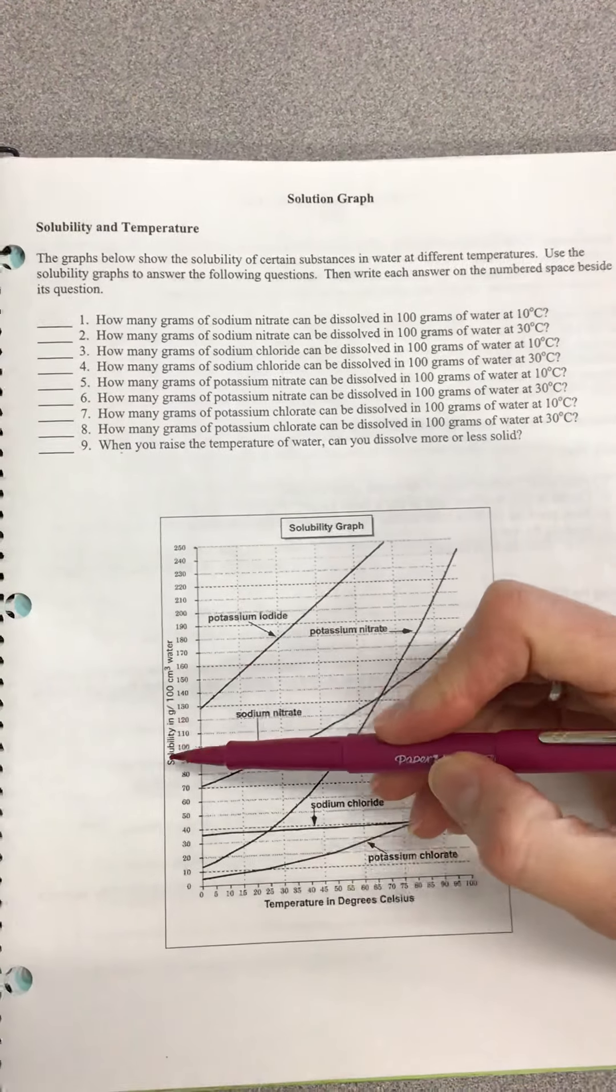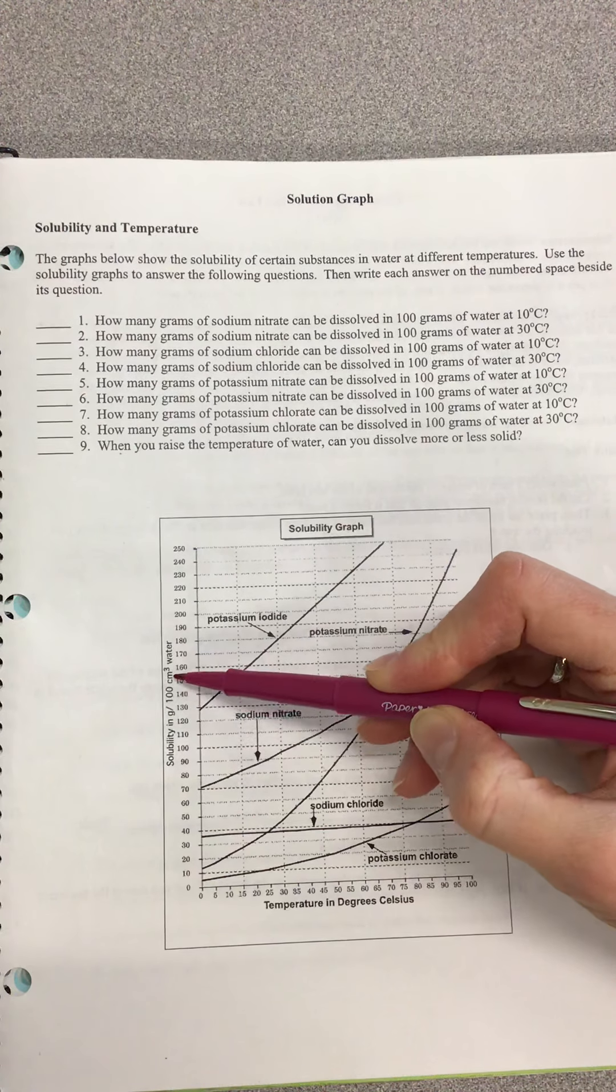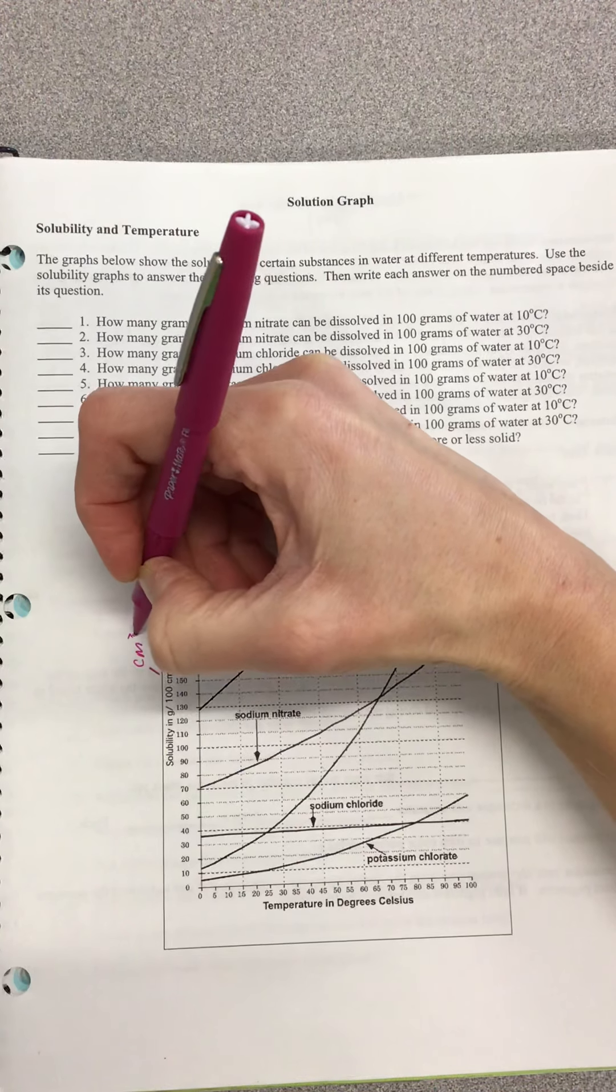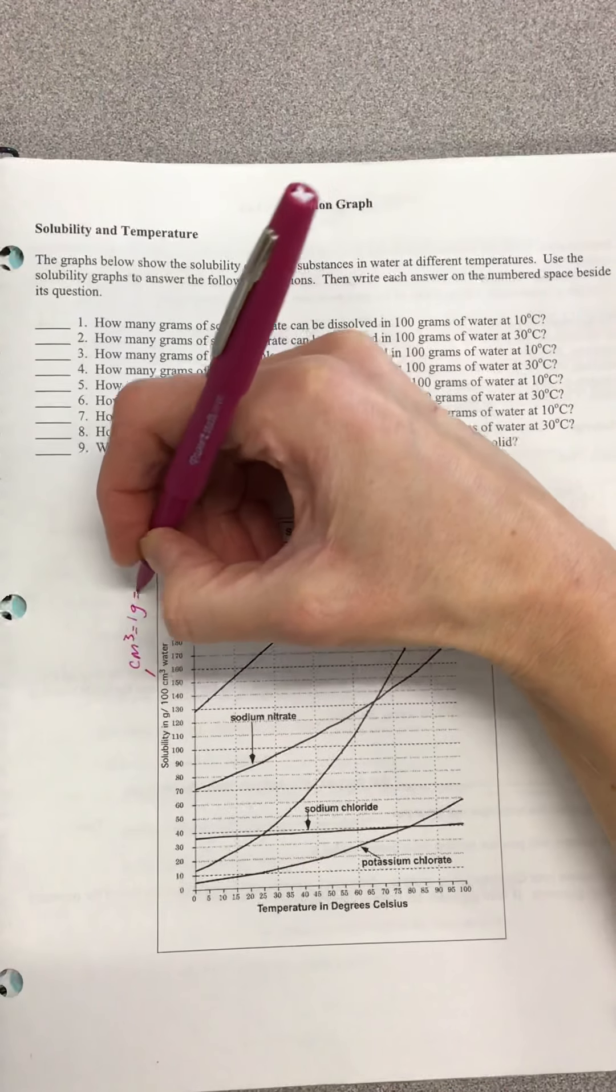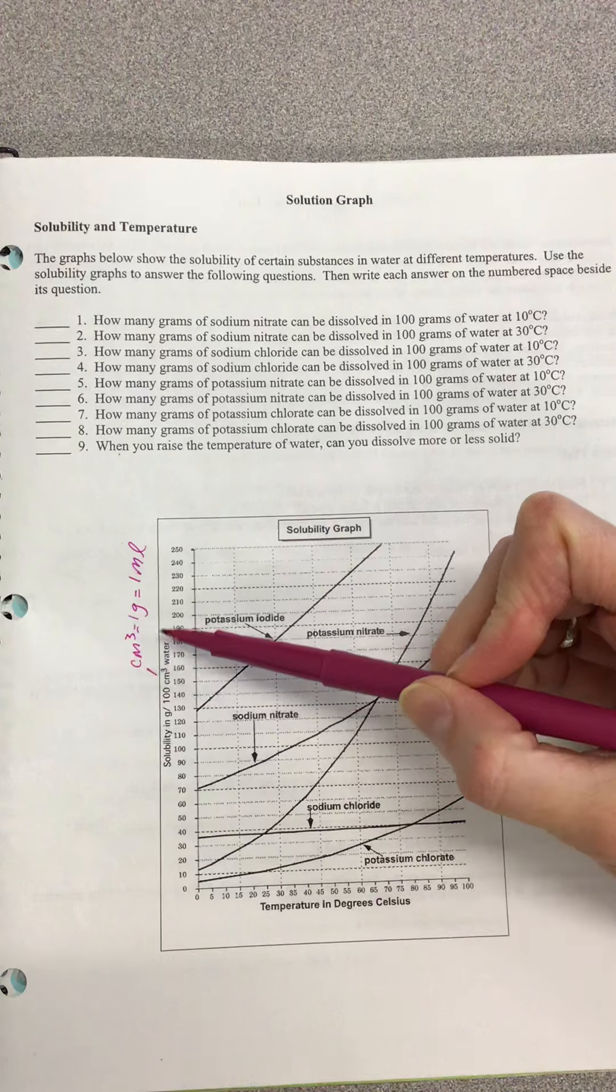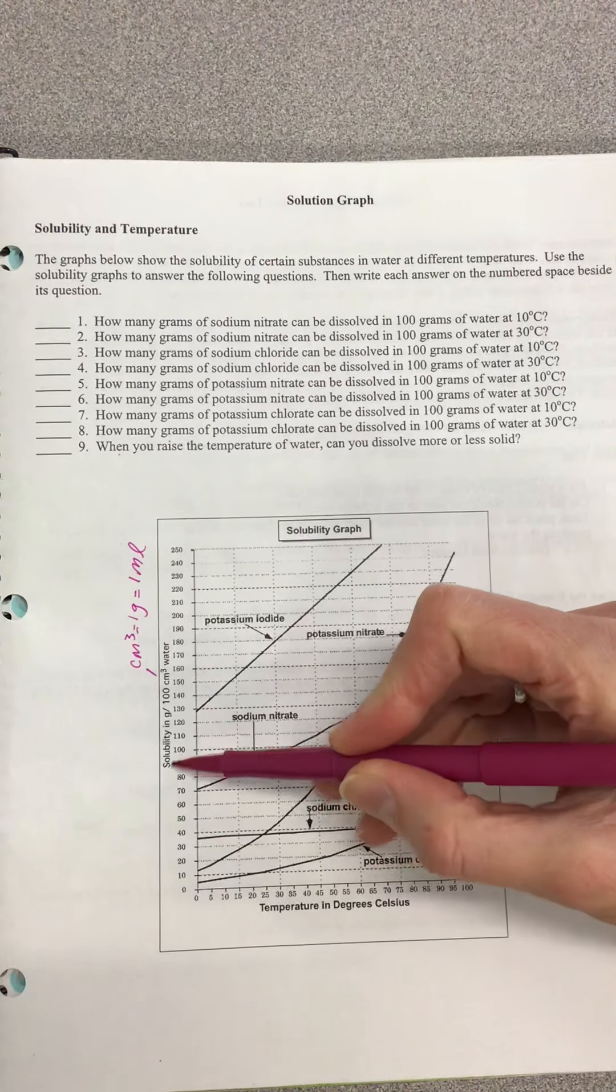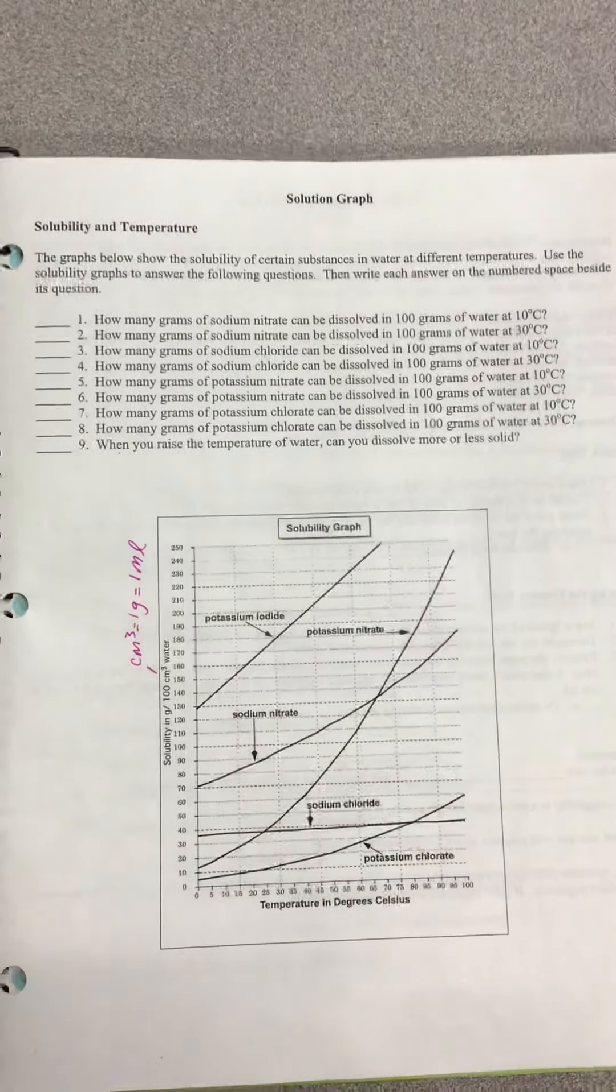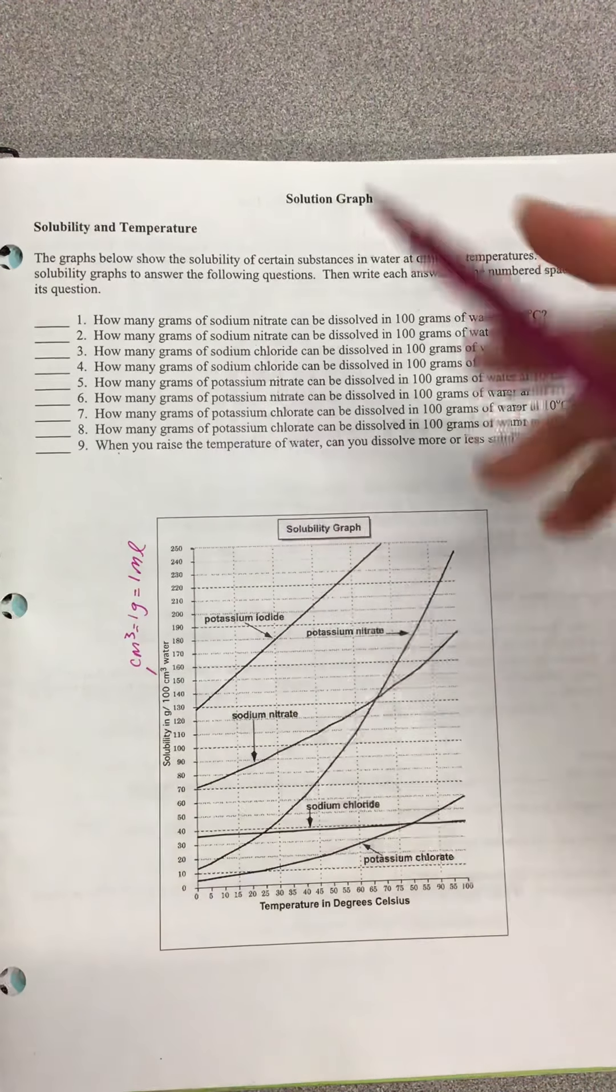The first thing you always want to do when reading a graph is identify the x and y axis. Here we've got the measure of solubility in grams per 100 centimeters cubed. Centimeters cubed also equals one milliliter, so it's basically saying 100 grams or 100 milliliters of water. This is our solubility in water, and down here is our temperature in degrees Celsius.